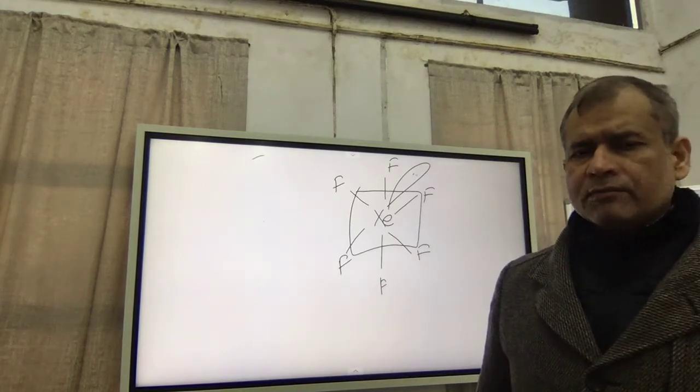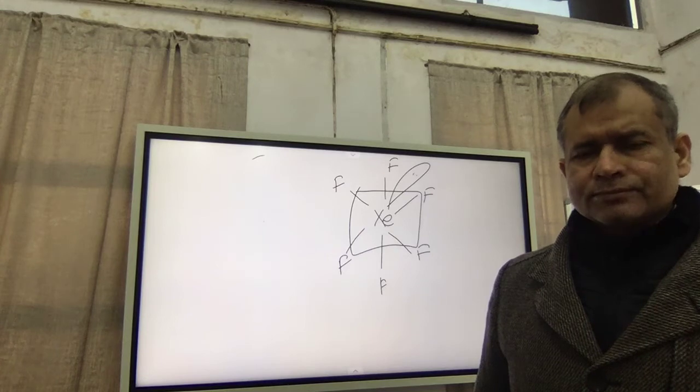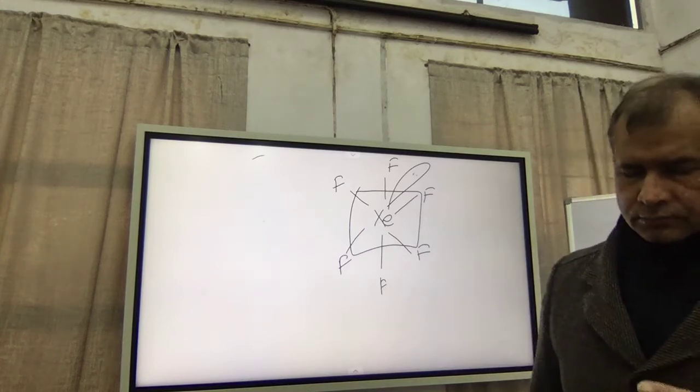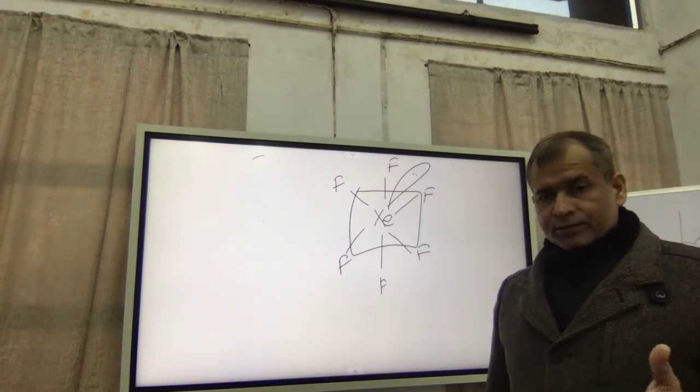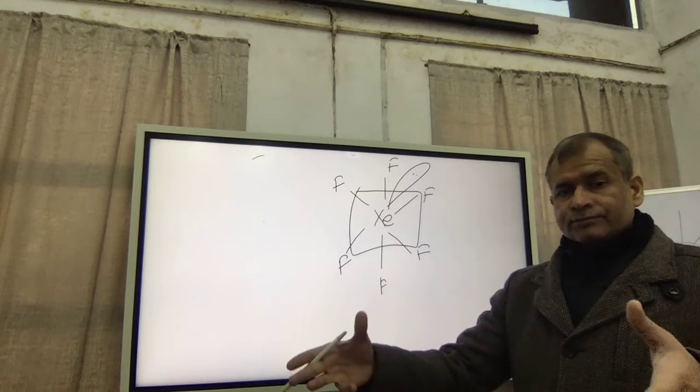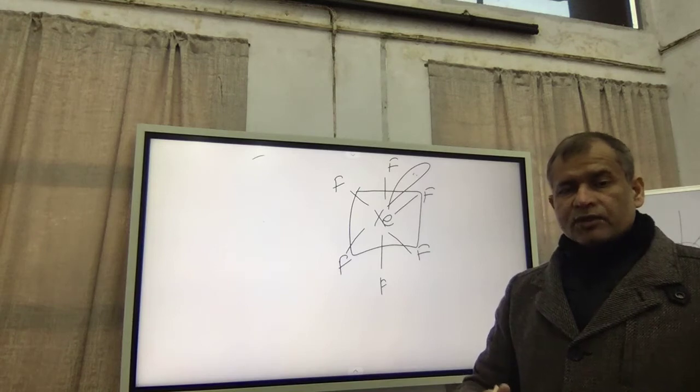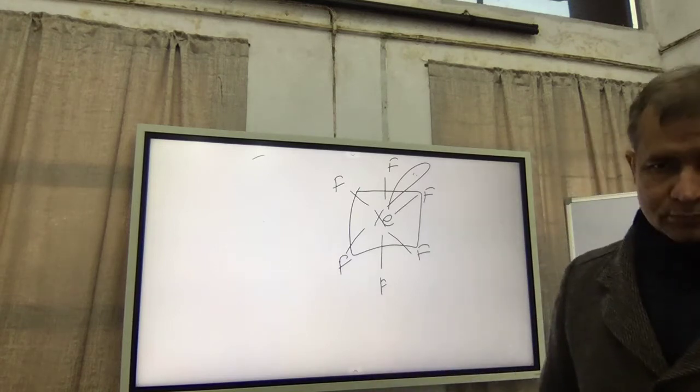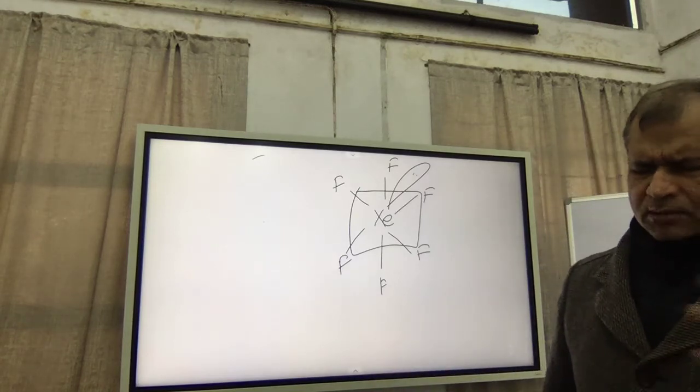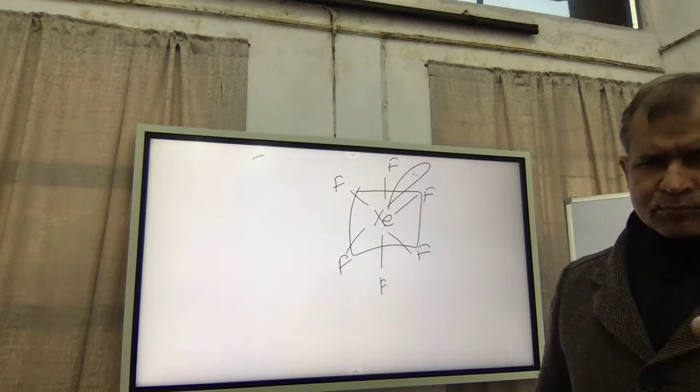But when you place the lone pairs, you have to place the lone pairs at the equatorial position. And the rest of the position of the fluorine and Cl will show it like a T-shaped body. So these are some of the things you solve all these examples which I have written.